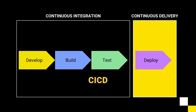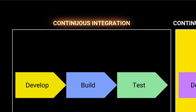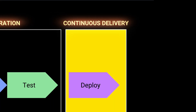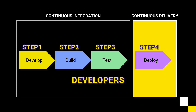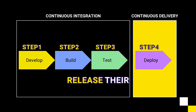In simple words, CI/CD, or Continuous Integration, Continuous Delivery, is a set of automated steps that helps developers to quickly release their software to production.